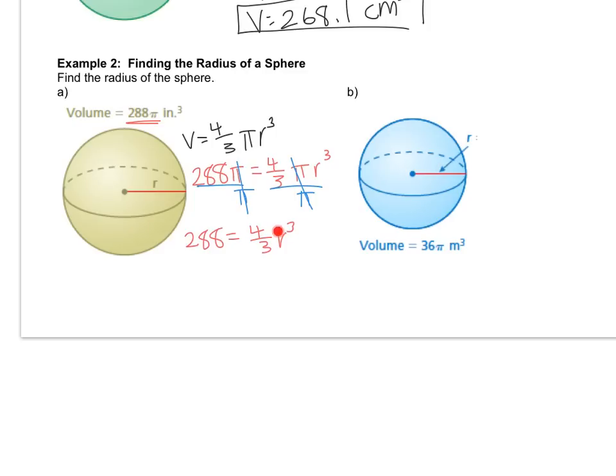So if I want to get the r by itself I have to get rid of the 4/3. Hopefully you remember from chapter 1 what do you do to inverse a fraction? You multiply by the reciprocal. So I'm going to multiply both sides by 3/4. If you don't remember that, you need to start remembering it because you should know by now. So 288 times 3/4 is 216 and that equals r cubed. So the way that you inverse the cube is you cube root, and the cube root of that is 6. So the radius is 6 and the label is inches.